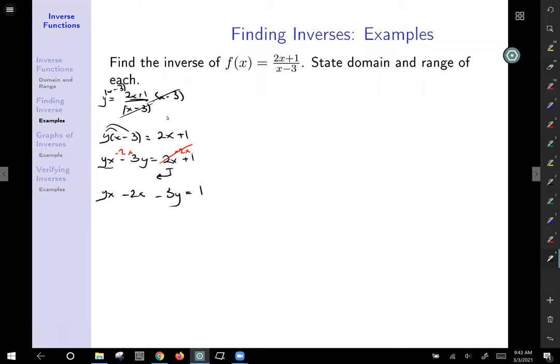Now, if I want to get x by itself, the next thing I need to do is I want to move that 3y to the other side, get the y's away from it. I know there's a y in front of the x out front, but we'll worry about him in a minute. So first thing is get anything that doesn't involve x to the other side. Since it's being subtracted, I will add 3y to both sides so that it adds to zero on the left side. And I will get yx minus 2x equals 1 plus 3y.